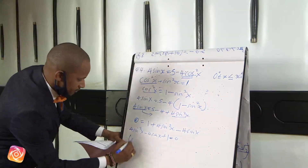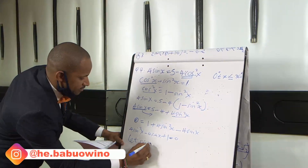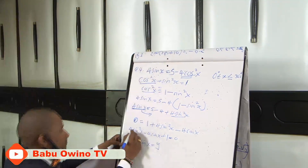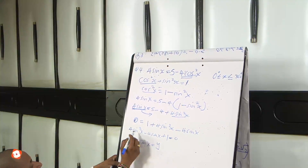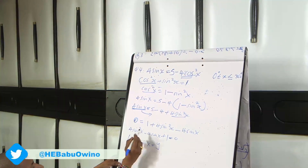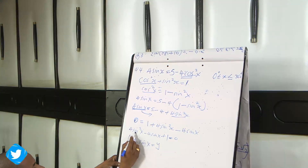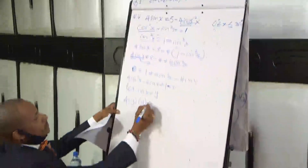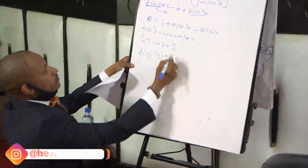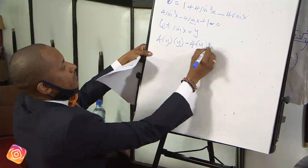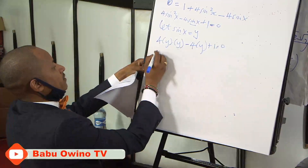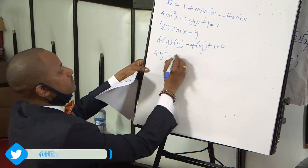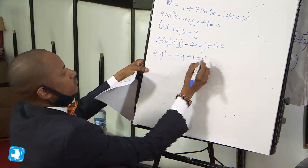We let sin x = y to further simplify. So 4 sin²x becomes 4(y)(y), and 4 sin x becomes 4y. The equation becomes 4y² − 4y + 1 = 0.